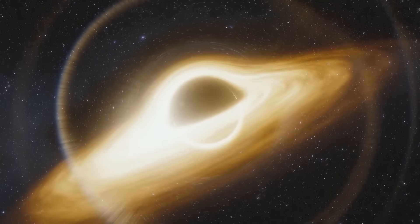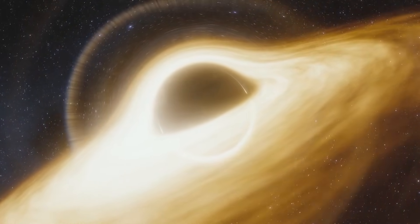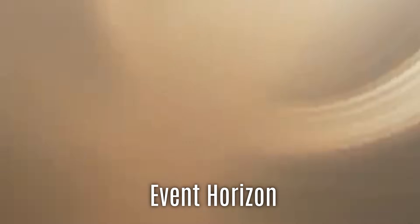Rather than being simple voids of nothingness, black holes have distinct layers. Thanks to detailed image analysis, scientists identified three main regions, with the event horizon forming the outermost boundary.